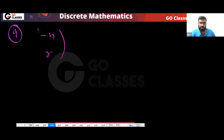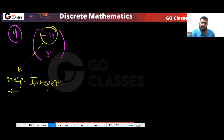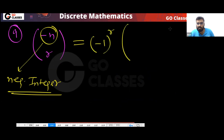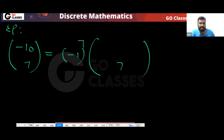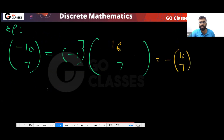The ninth point: when n is a negative integer, nCr simplifies as follows. For example, (−10)C7 = (−1)^7 · C(10+7−1, 7) = −C(16,7). So for negative integer n, nCr = (−1)^r · C(n+r−1, r), and you can compute it this way.